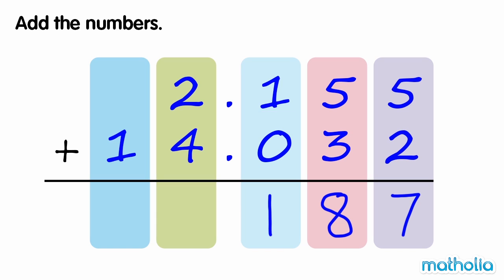Remember to write the decimal point. 2 ones plus 4 ones equals 6 ones. And we write the one ten in the tens column. So 2.155 plus 14.032 is equal to 16.187.